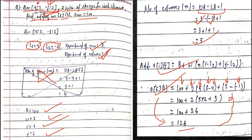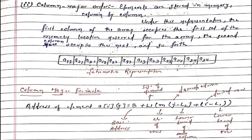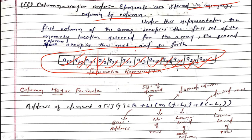Now we move to column-major order. In row-major we stored elements row by row; in column-major we store them column by column. The first column occupies the first set of memory locations, the second column the next, and so on. For our 3x4 array, the storage order would be: a[1][1], a[2][1], a[3][1] (first column), then a[1][2], a[2][2], a[3][2] (second column), then the third and fourth columns similarly.